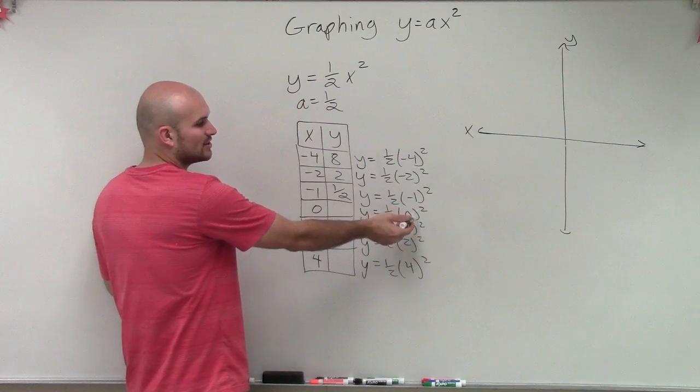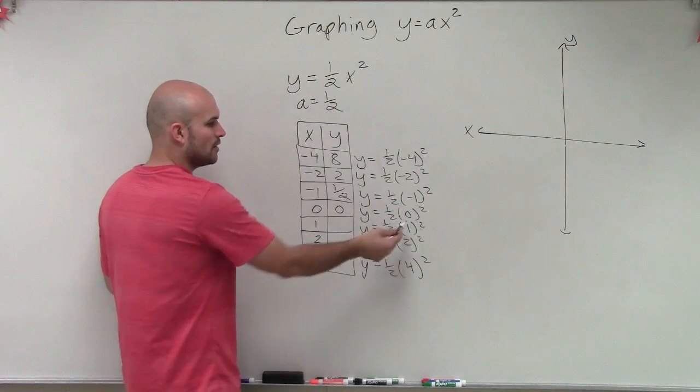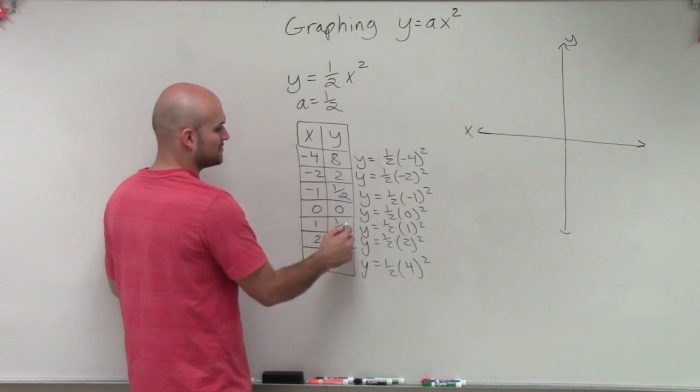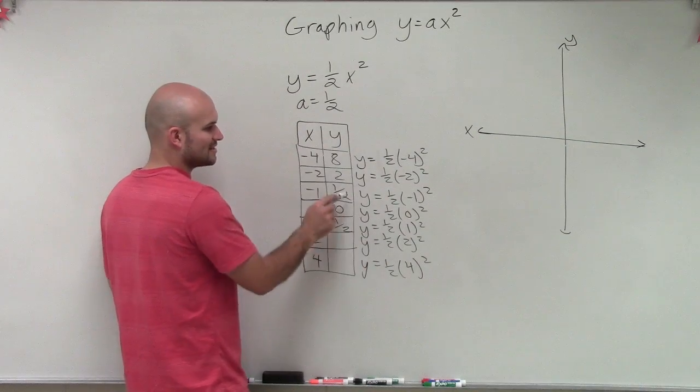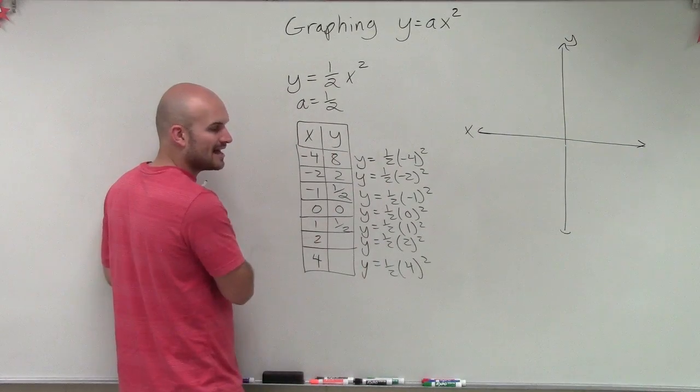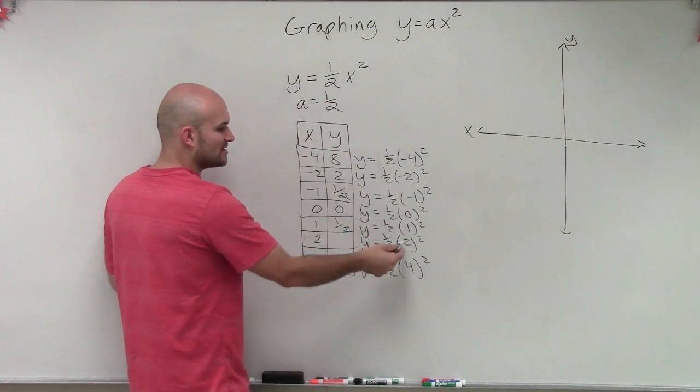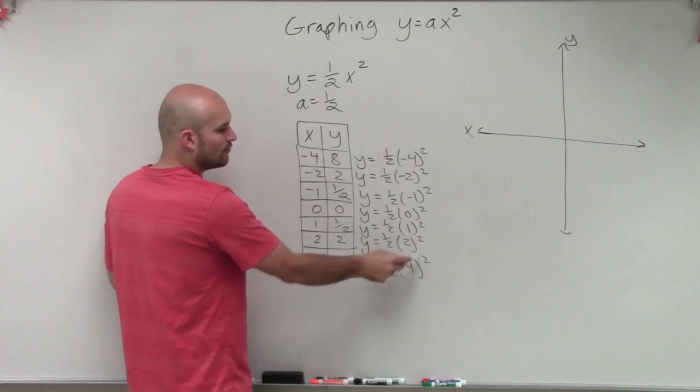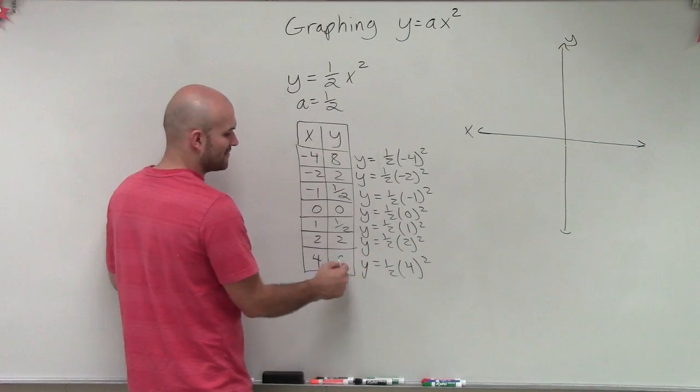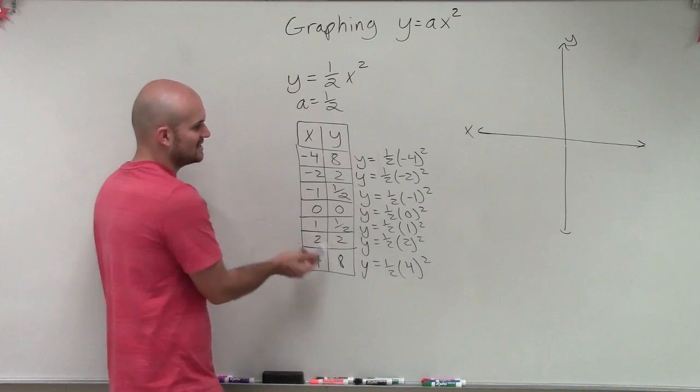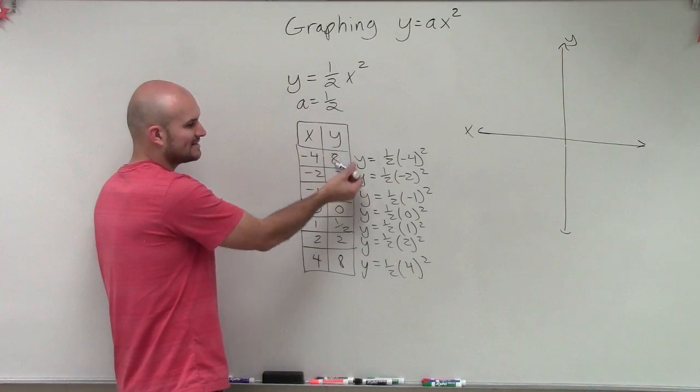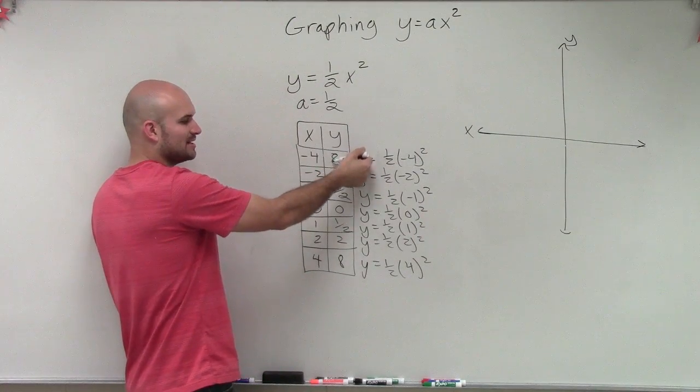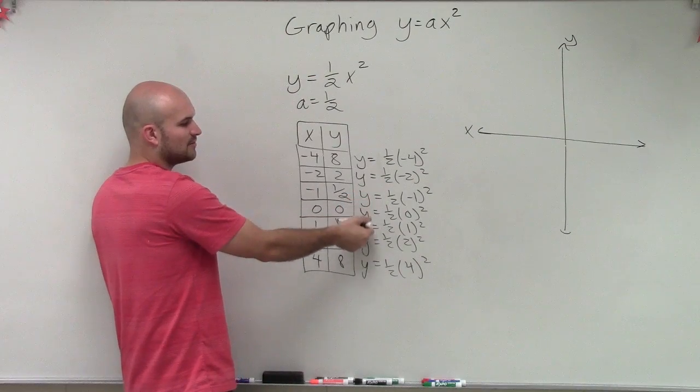0 squared is 0, 0 times 1 half is 0. 1 squared is 1, 1 times 1 half is 1 half. And notice how the rest of these are going to mimic exactly what I had up here for the negative. 2 squared is 4, 4 times 1 half is 2. 4 squared is 16, 16 times 1 half is 8. You can see as I go from the left, I'm getting closer to my axis of symmetry, and then I'm reflecting again.